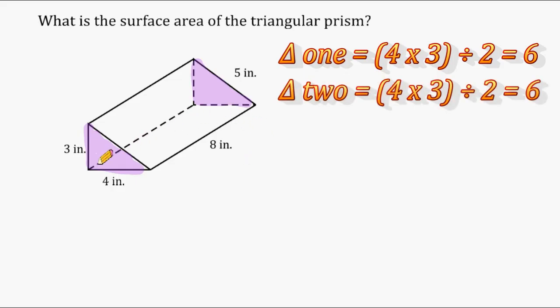Alright, let's find the area of this rectangular surface right here. Now the dimensions of this rectangle are 4 and 8. So if we multiply 4 by 8, that gives us an area of 32.